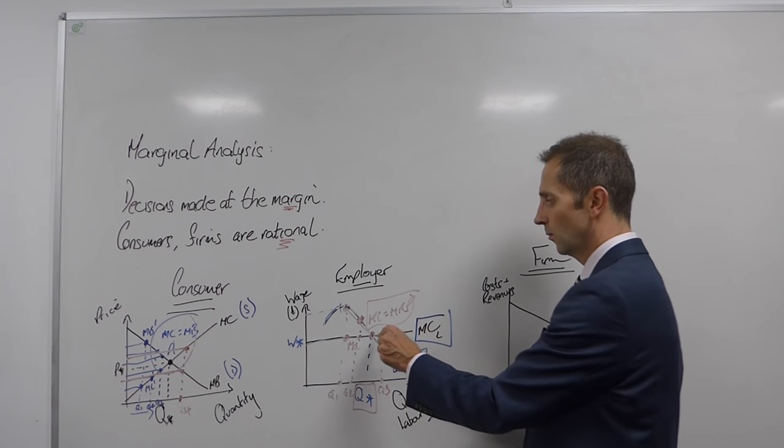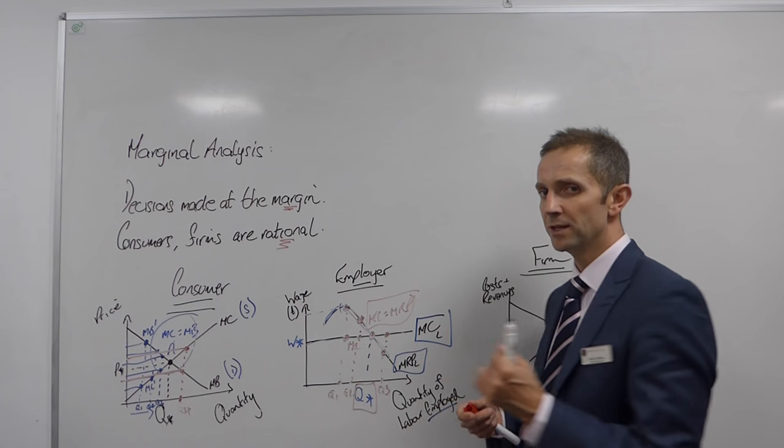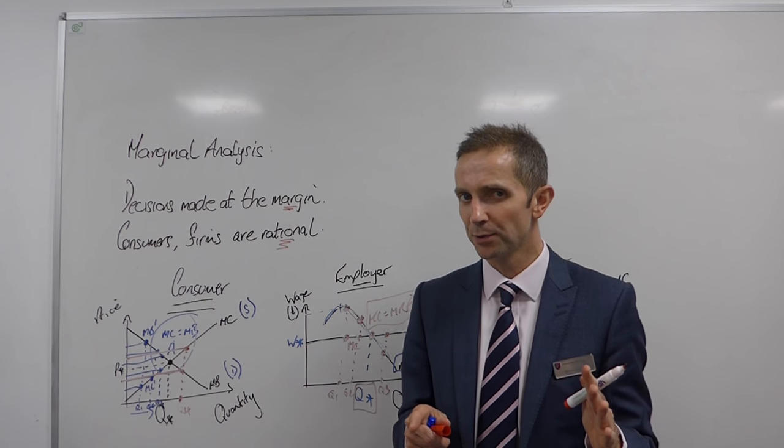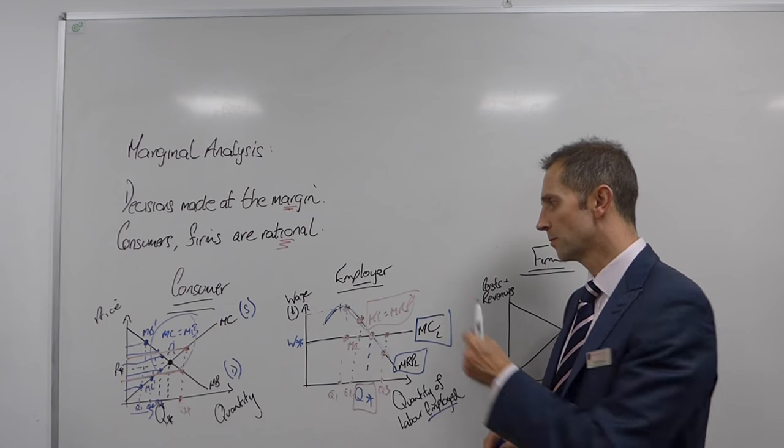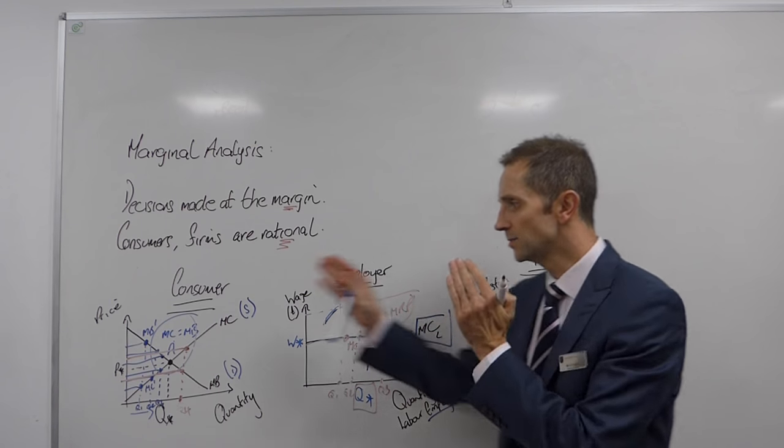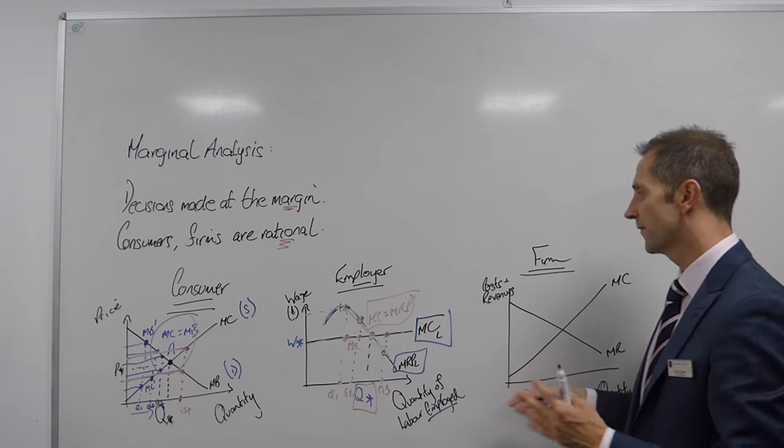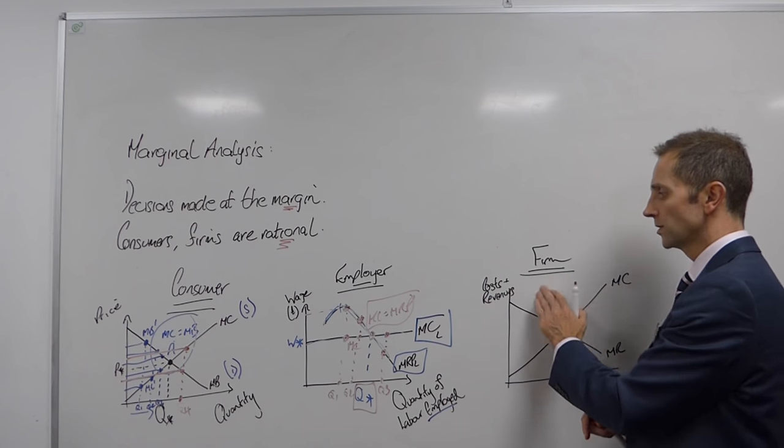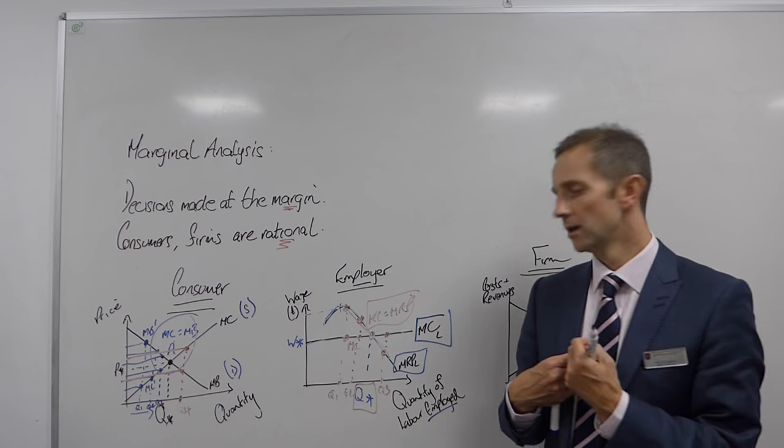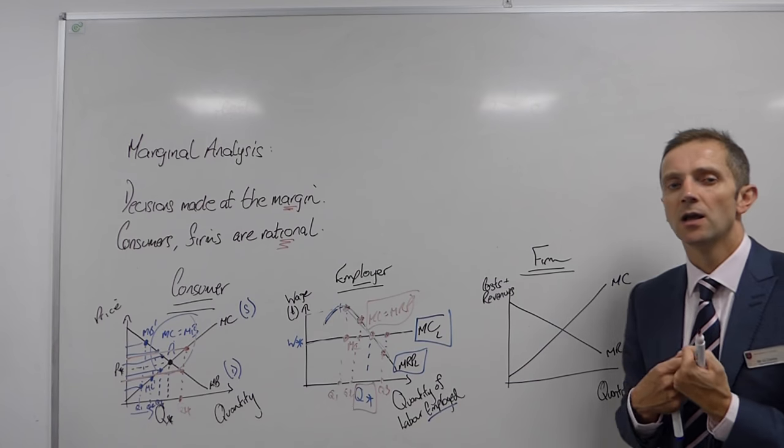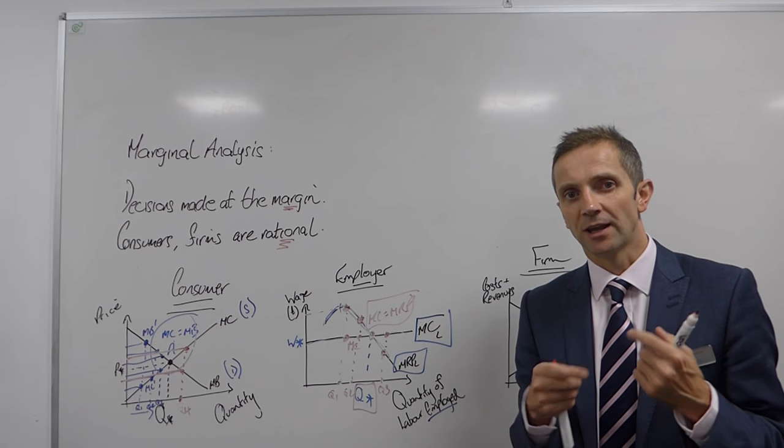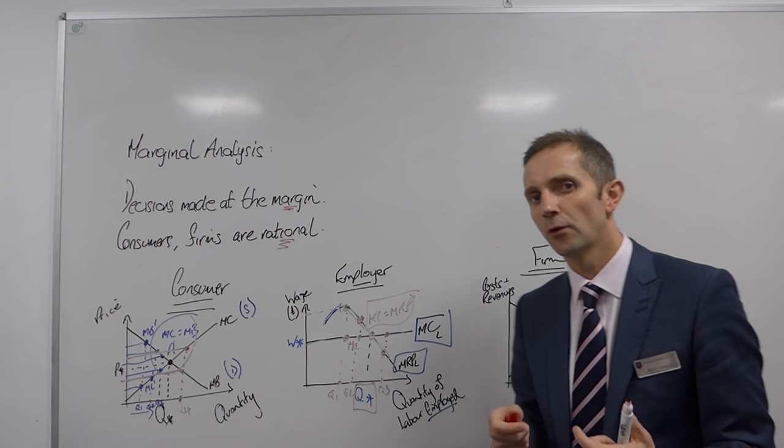So again, we're looking at a position from the employer, the rational employer's point of view, that you employ somebody up to the point where MC equals MRP. And then finally, ladies and gentlemen, what about the firm from whom we are buying things and who are supplying things for us?